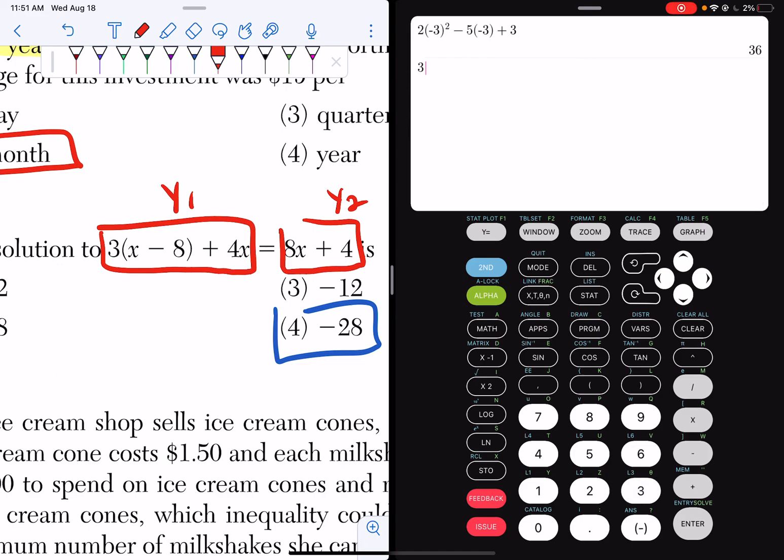So I'm going to make this before my iPad dies, plus 4x. I had to put this in y1. 3, parenthesis, x minus 8, plus 4x. Now go to y2, and I put in my 8x plus 4.